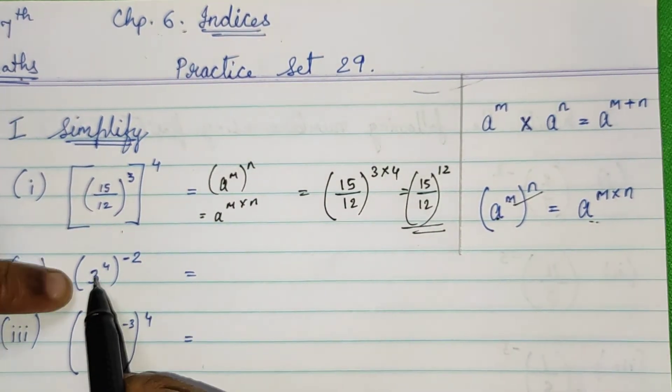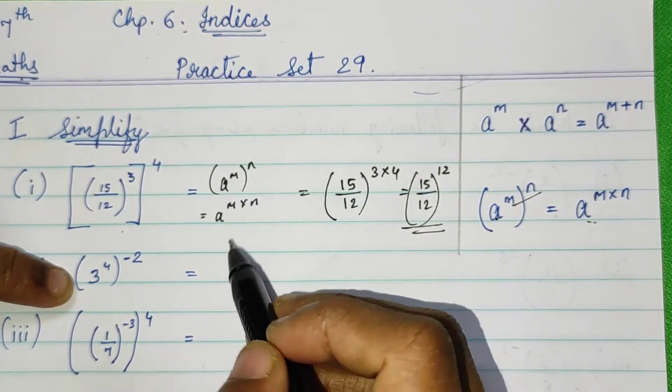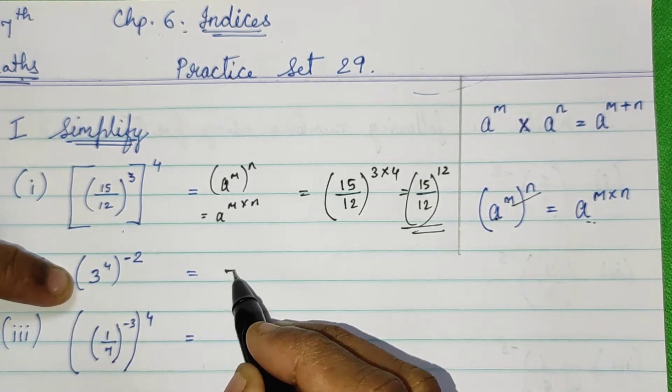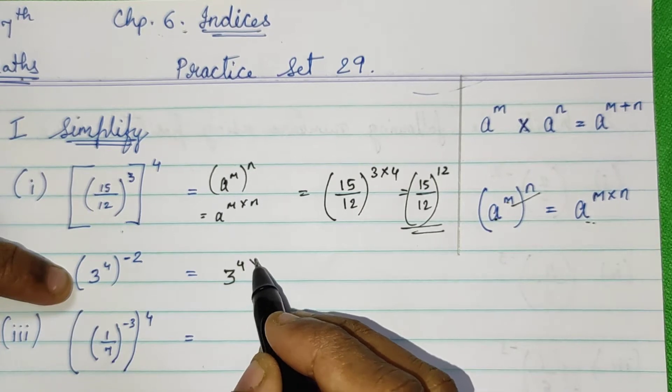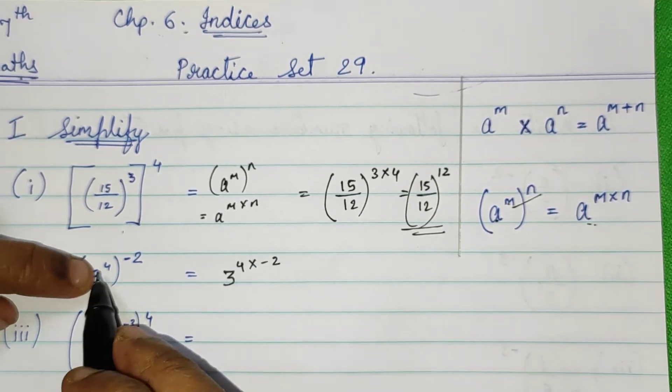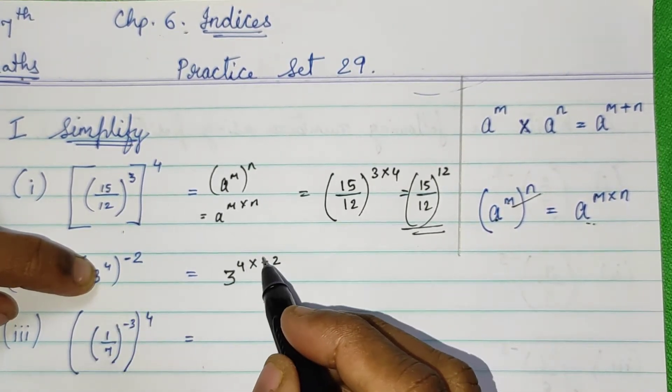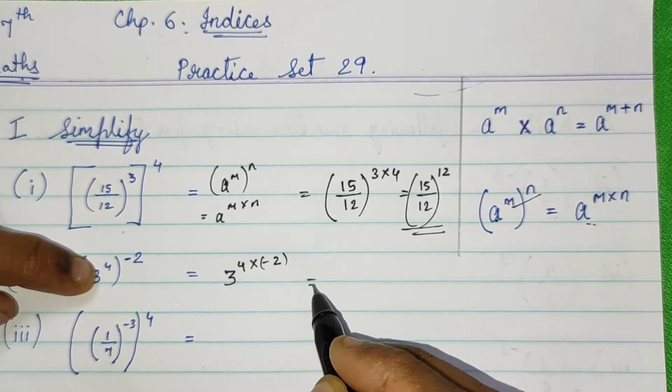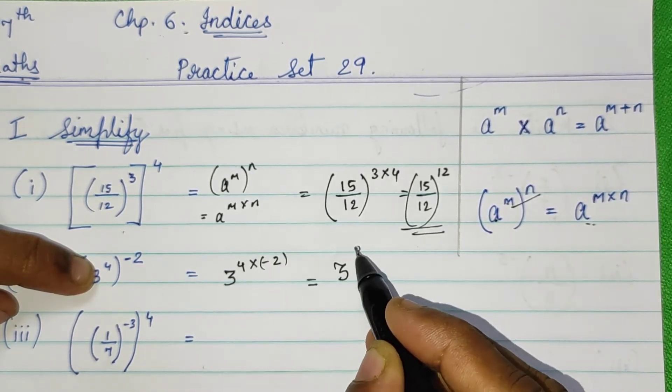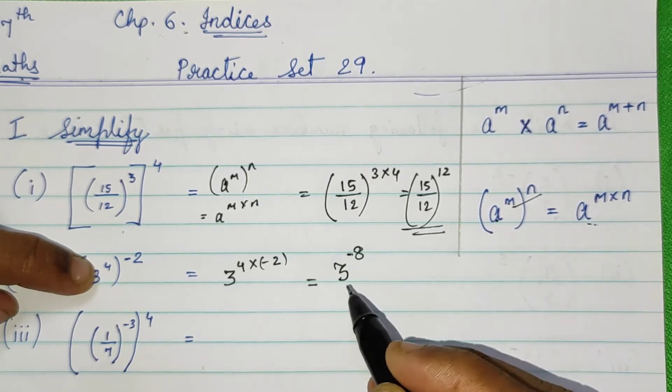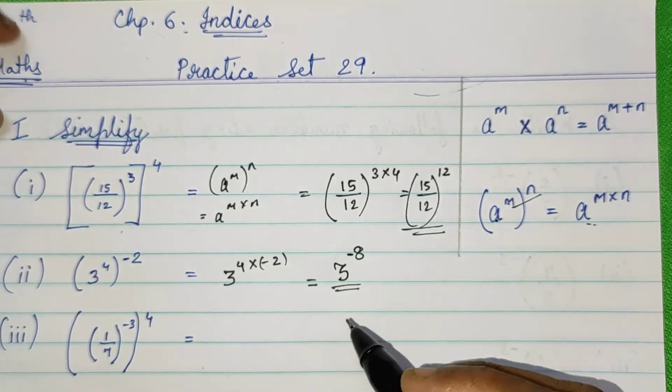Let's see the second sum. Again, repeat your formula and then 3 raised to 4 into minus 2. 4 into minus 2, you can take bracket. Your base is 3, 4 times 2 is 8, minus 8. This is your answer.